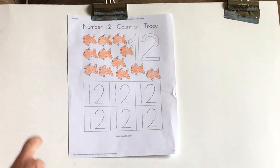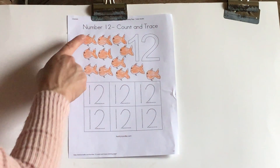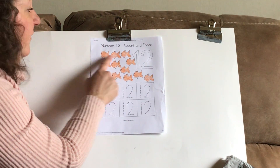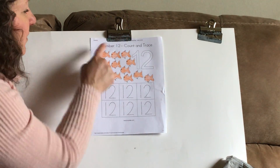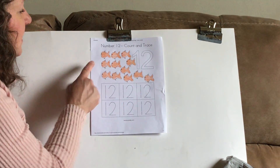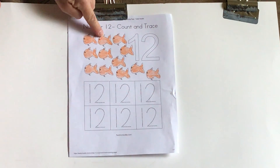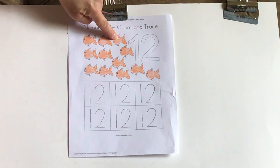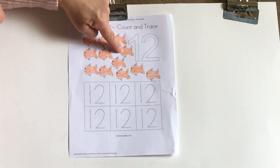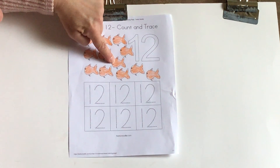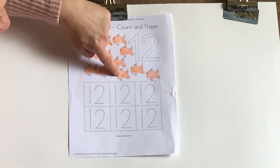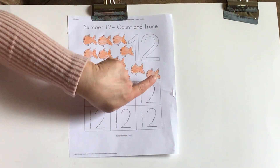When you're counting, it's always a good idea to start at the top and go from top to bottom and left to right, because when you start jumping around, it makes it a lot harder to count. So let's count together again: one, two, three, four, five, six, seven, eight, nine, ten, eleven, twelve.